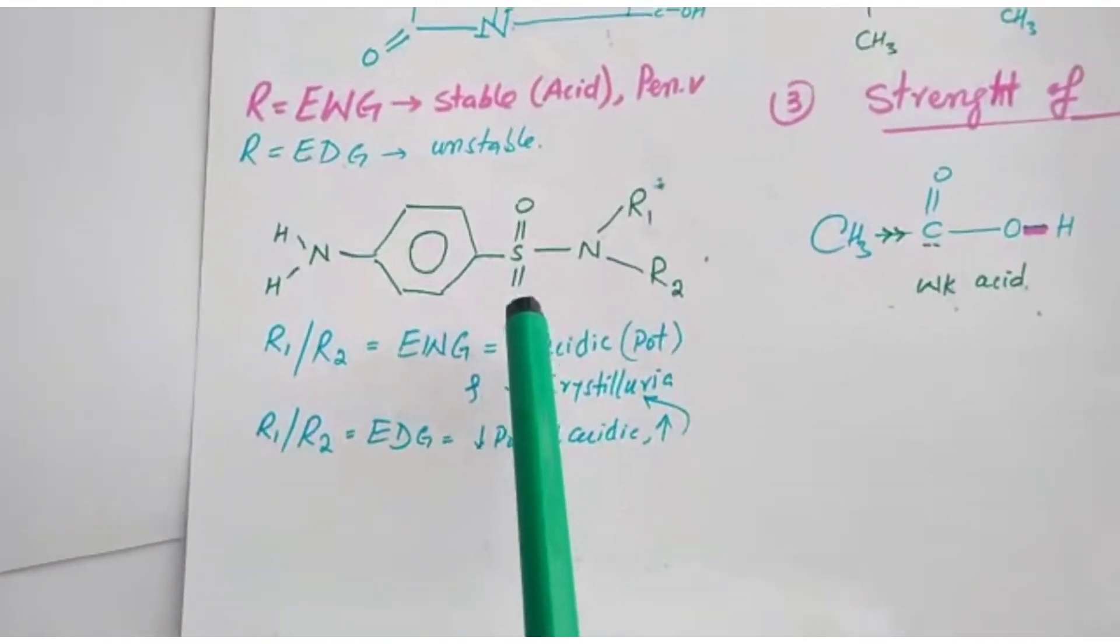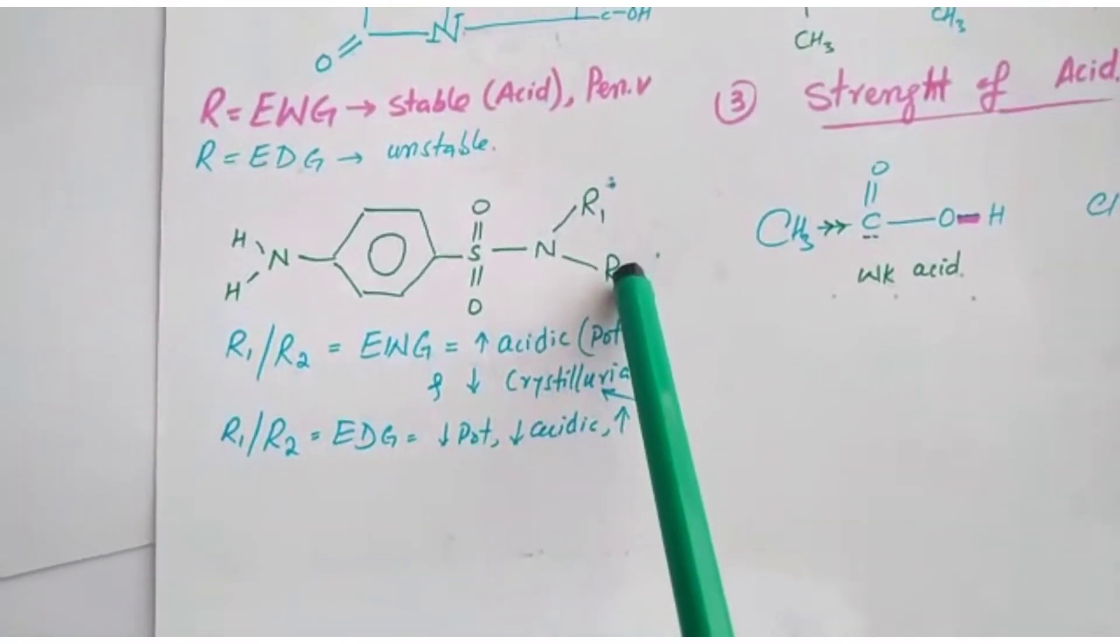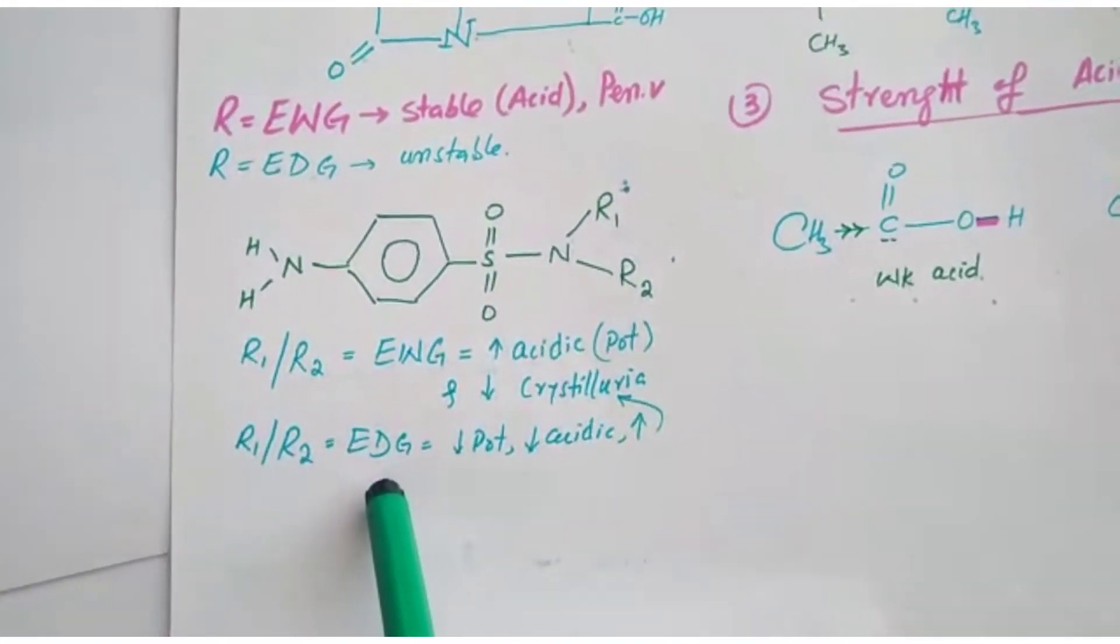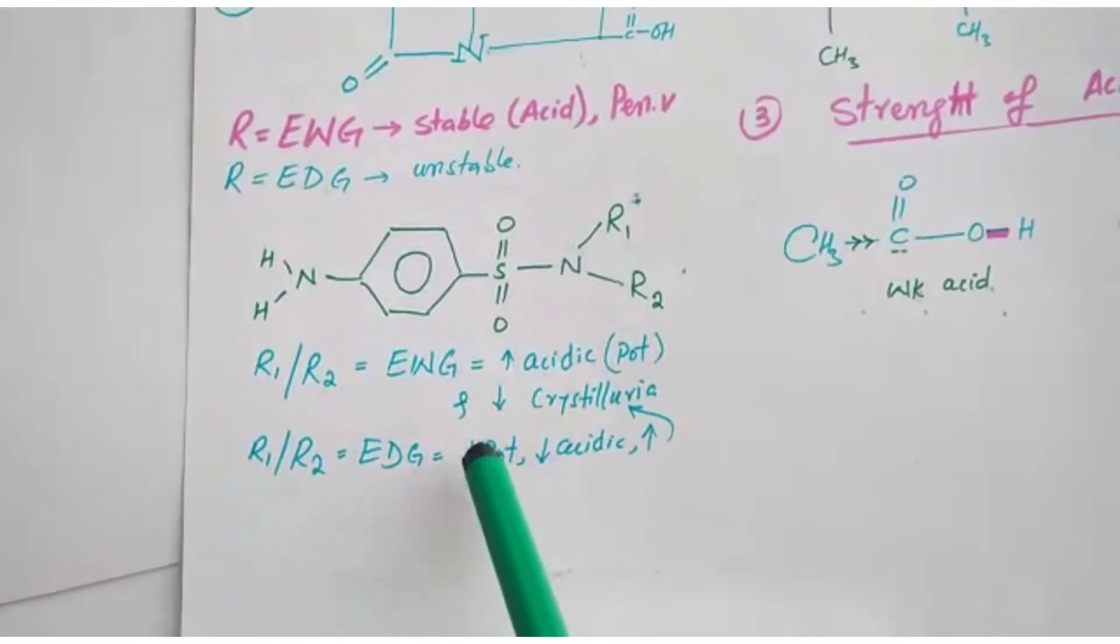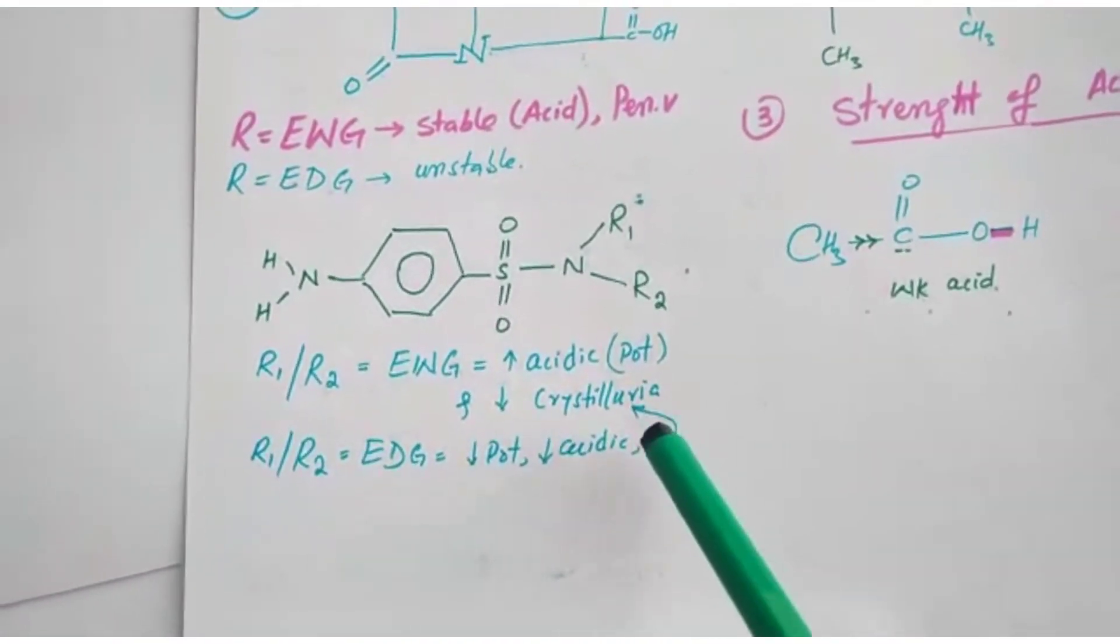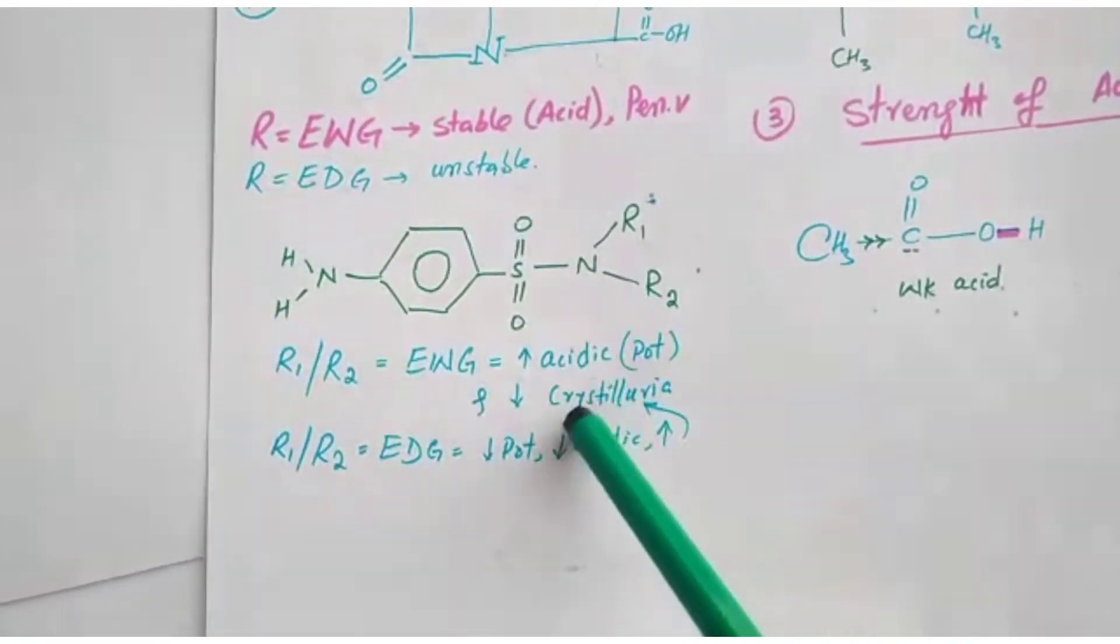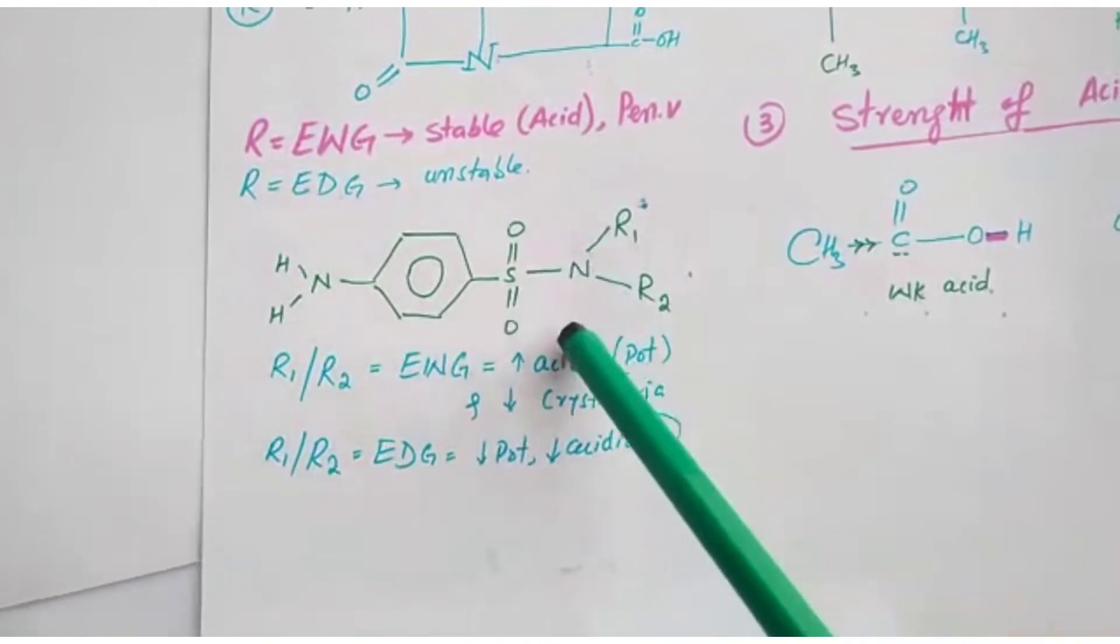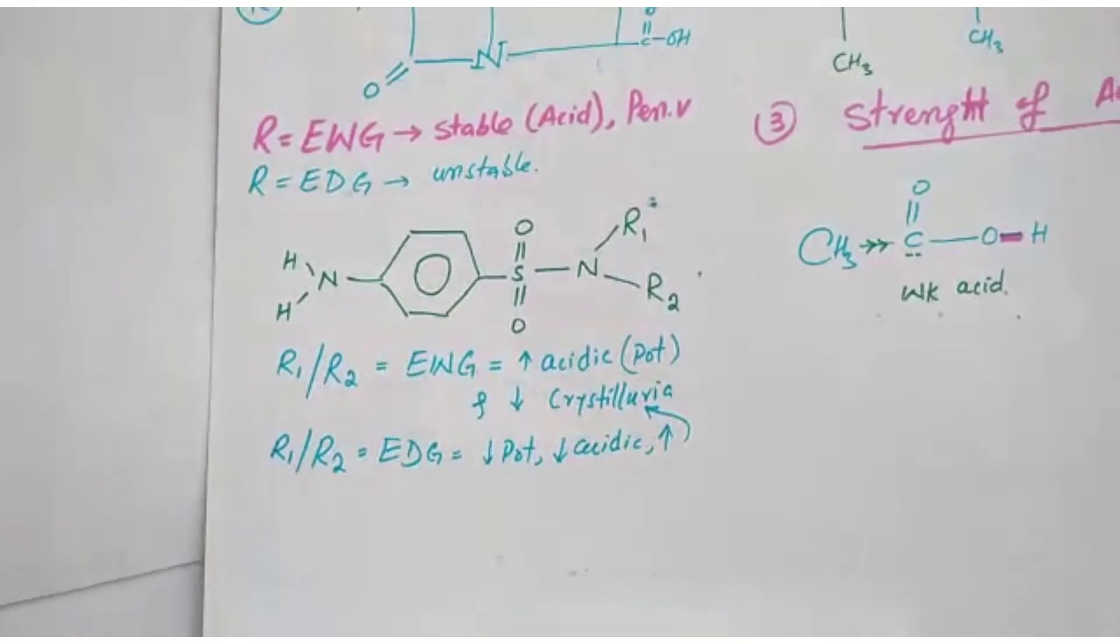If R groups, both or one of them, are electron donating group, the compound will be less potent, less acidic, and there will be more chance of crystalluria. For more detail, please visit my YouTube channel video on sulfonamides and crystalluria.